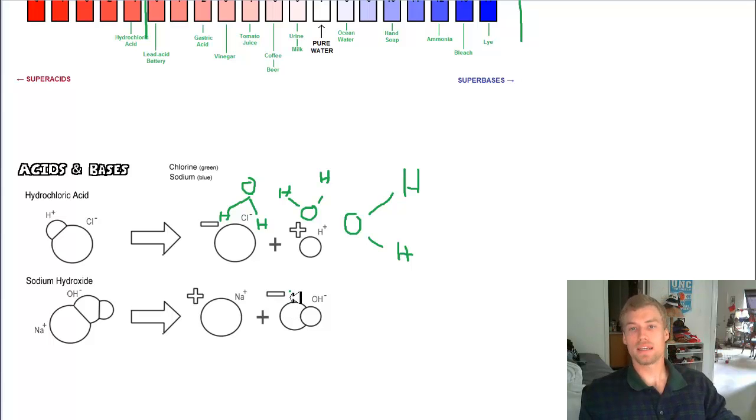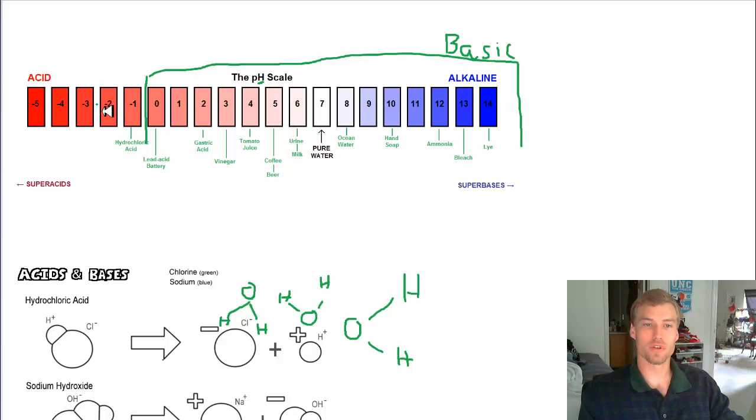Now, in your body, if we look back here at the pH scale, your blood is going to be right in here. It's just slightly alkaline. And that's important because the enzymes in your body require a specific pH to work at.